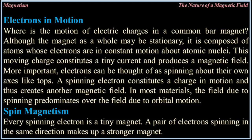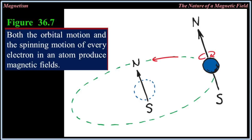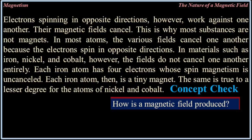In most materials the field due to spinning predominates over the field due to orbital motion. Every spinning electron is a tiny magnet. A pair of electrons spinning in the same direction makes up a stronger magnet. Electrons spinning in opposite directions, however, work against one another — their magnetic fields cancel. This is why most substances are not magnets. In materials such as iron, nickel, and cobalt, the fields do not cancel one another entirely. Each iron atom has four electrons whose spin magnetism is uncancelled, making each iron atom a tiny magnet. The same is true to a lesser degree for the atoms of nickel and cobalt.